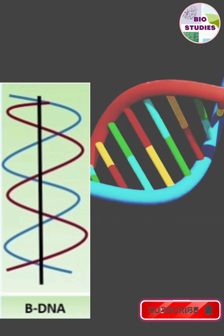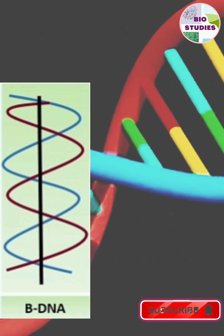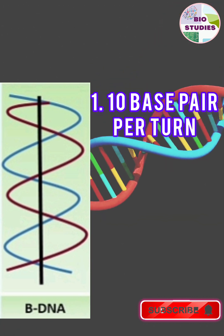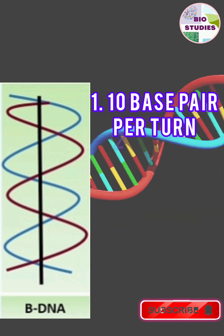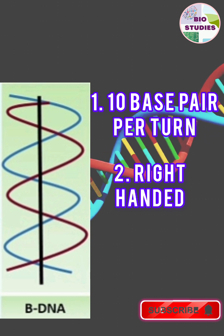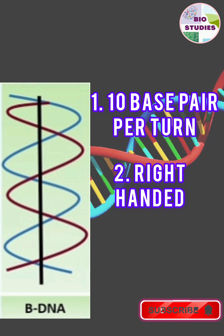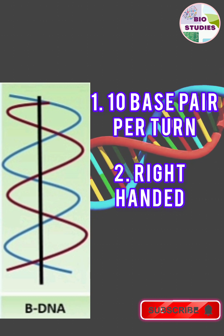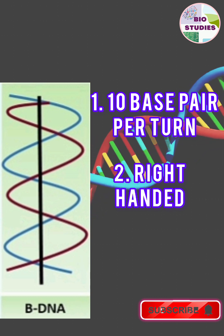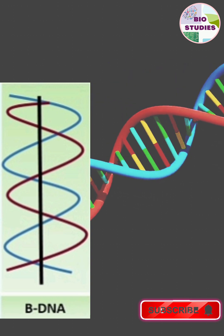Next is B-DNA. There are 10 base pairs present per turn and it is also right-handed. In the double helix model of Watson and Crick, the DNA type is B type.